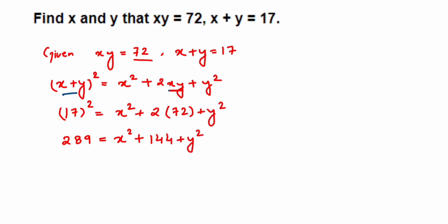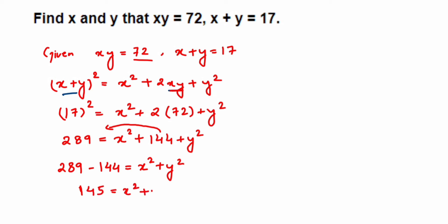17² is 289, so 289 = x² + 144 + y². Transposing 144 to the other side: 289 − 144 = x² + y², which gives us 145 = x² + y². So x² + y² = 145.